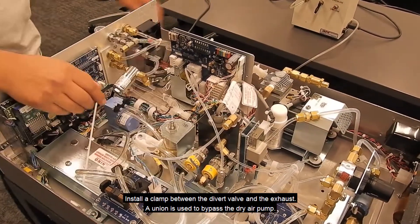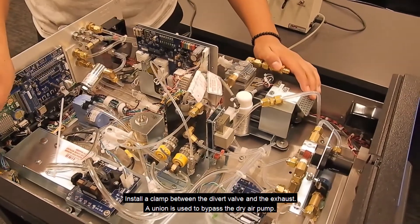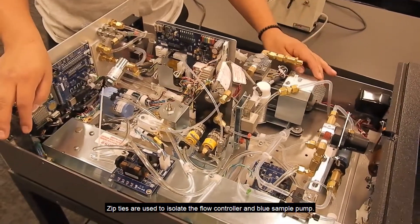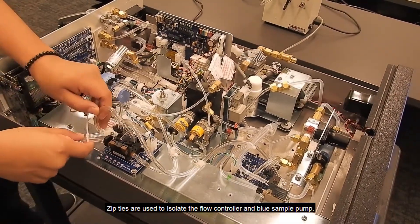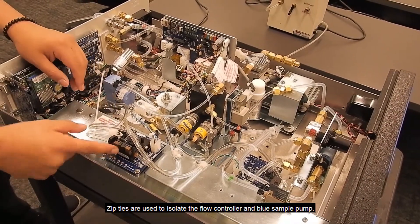Then a union is used to bypass the dry air pump. Zip ties are used to isolate the flow controller and the blue pump.